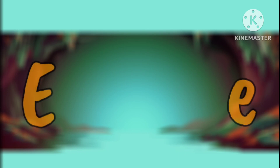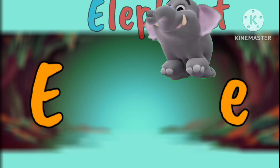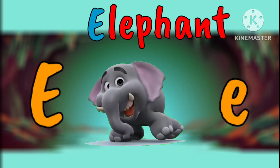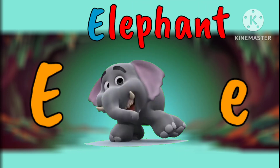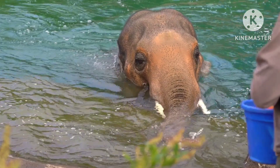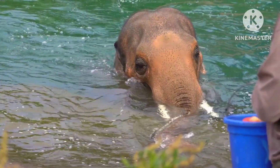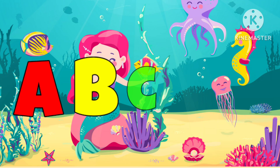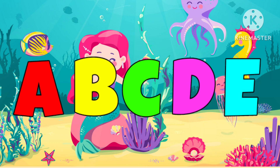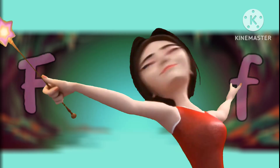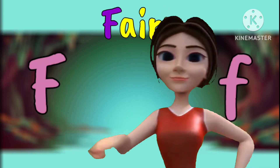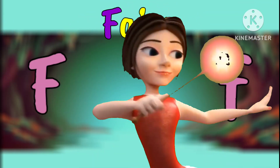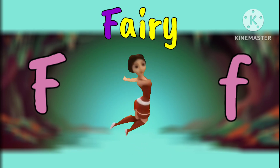E is for Elephant. E, Elephant. F is for Fairy, Fairy, Fairy.